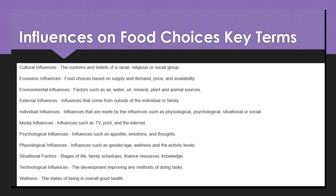Environmental influences are factors such as air, water, soil, minerals, plant, and animal sources. External influences are influences that come from outside of the individual or family.